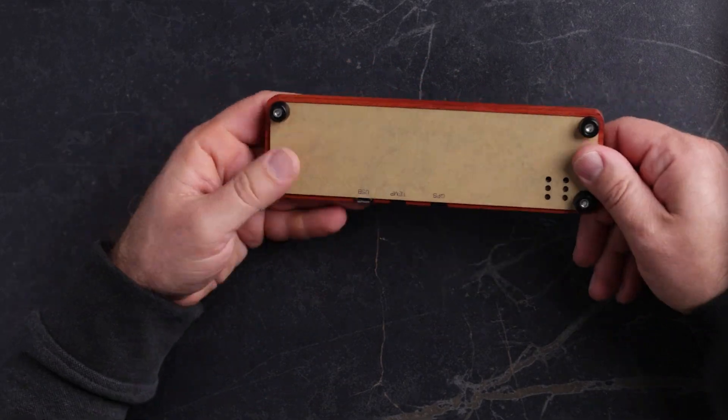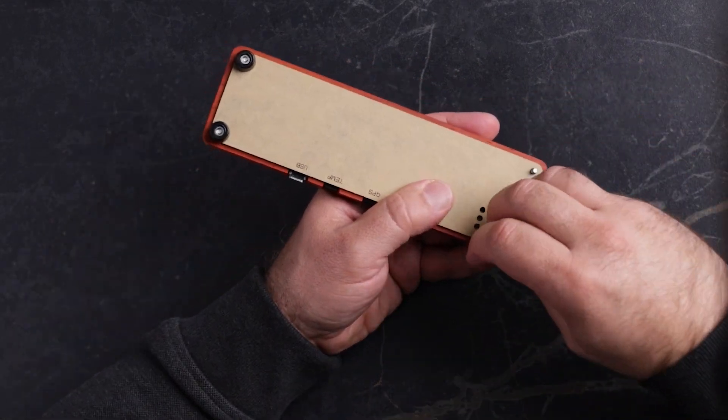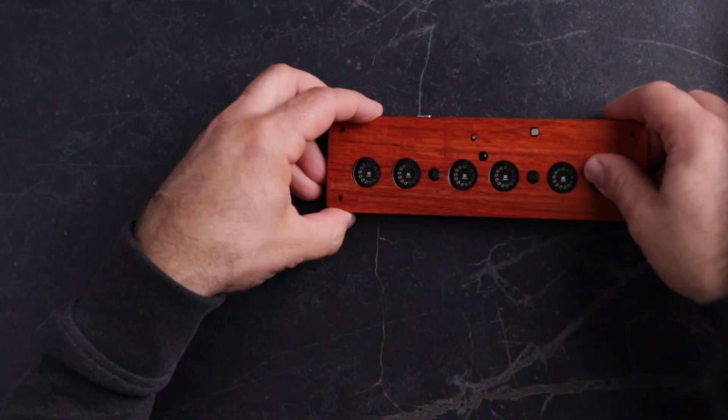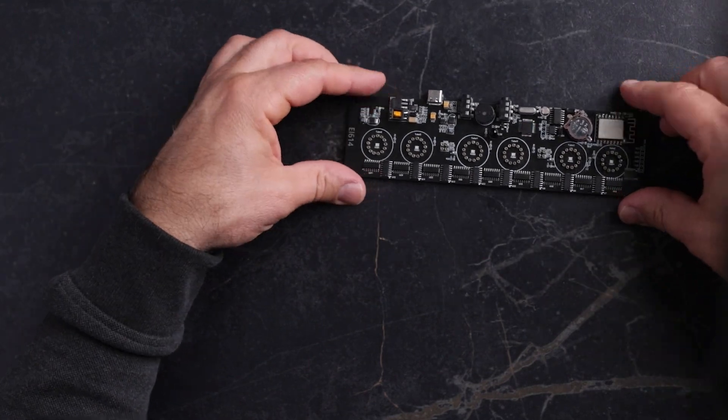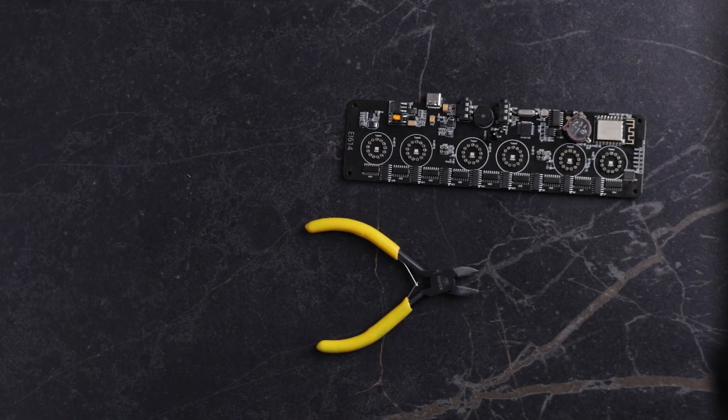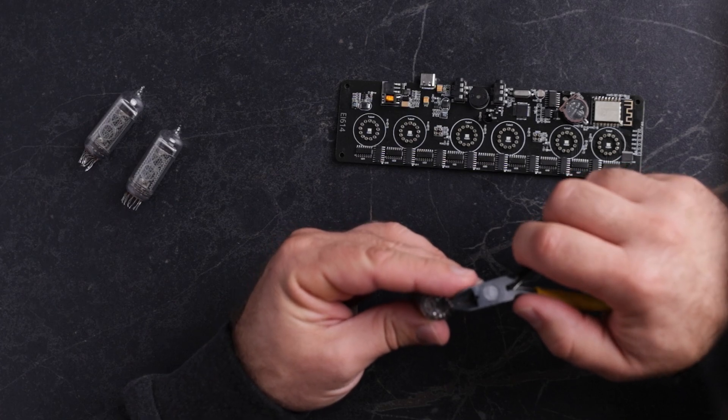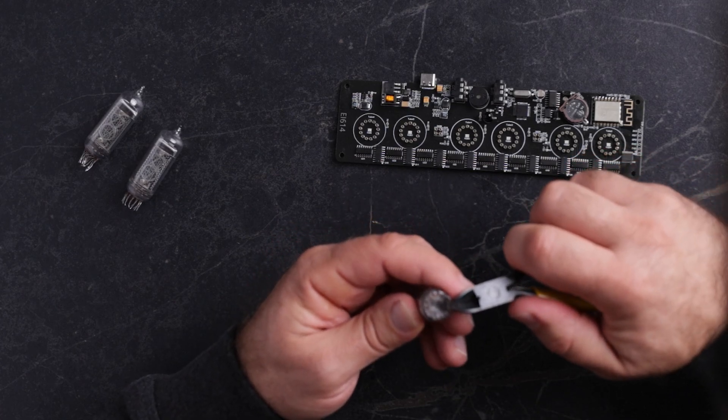To install the tubes, first unscrew four screws to remove the wooden case. Here's the main board. We need nippers to take one Nixie tube and straighten up the wires.